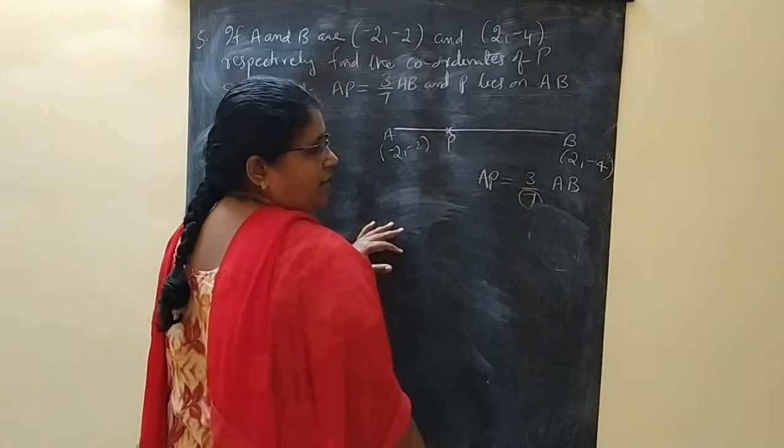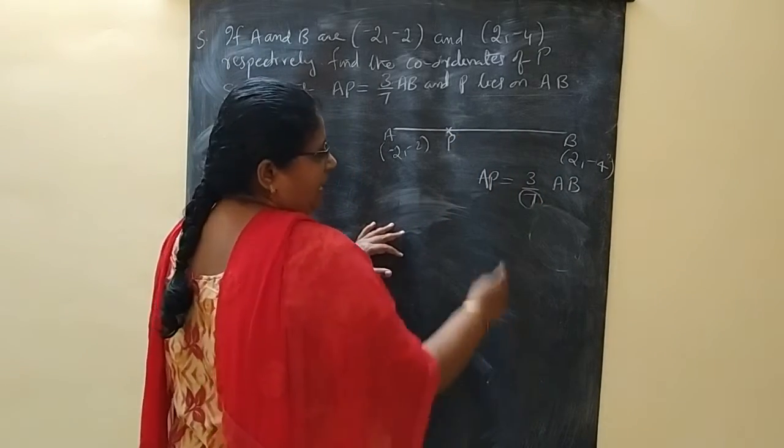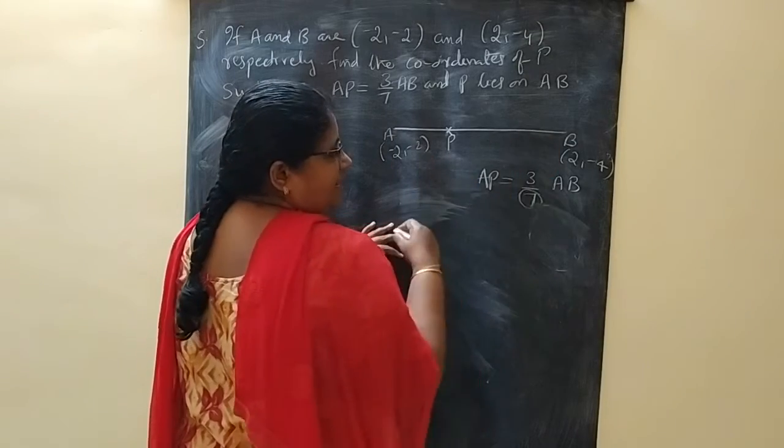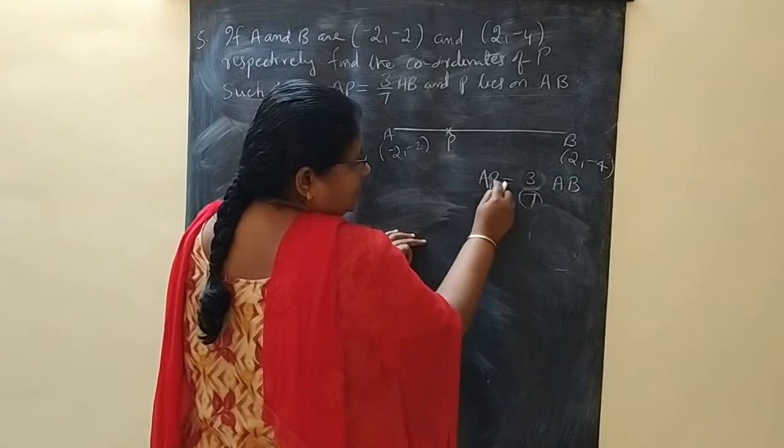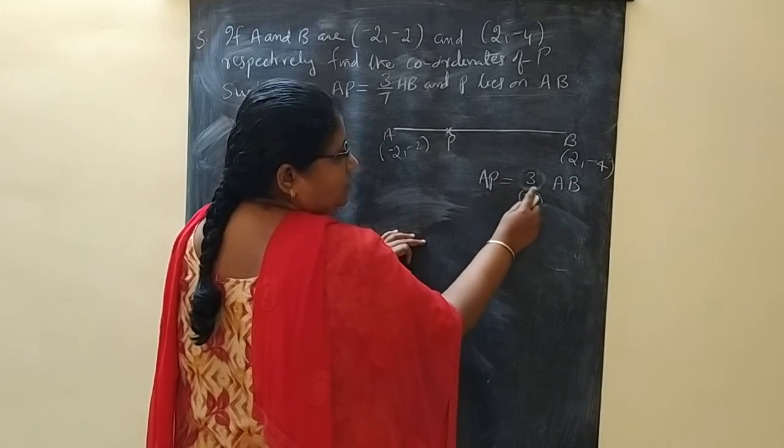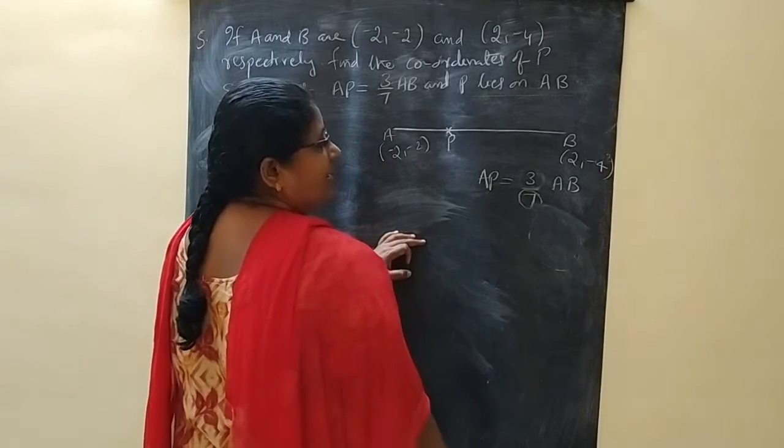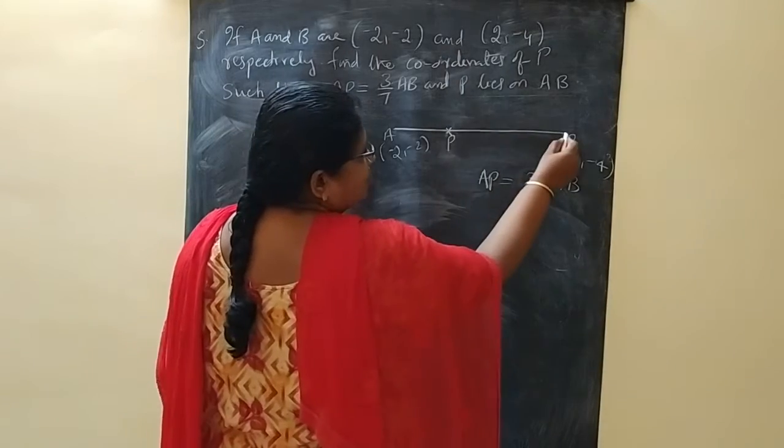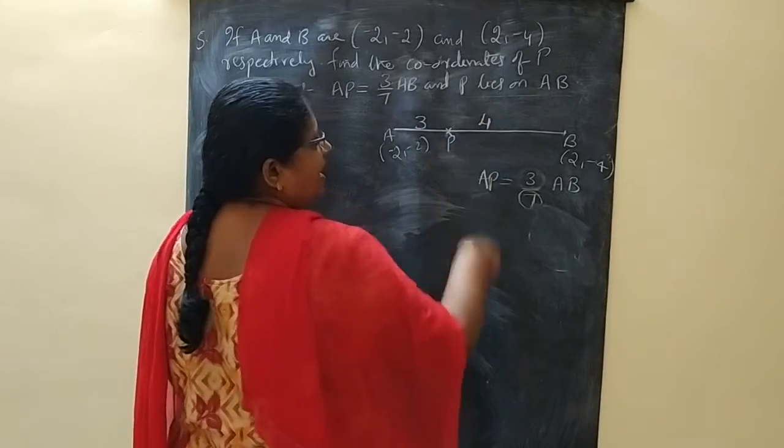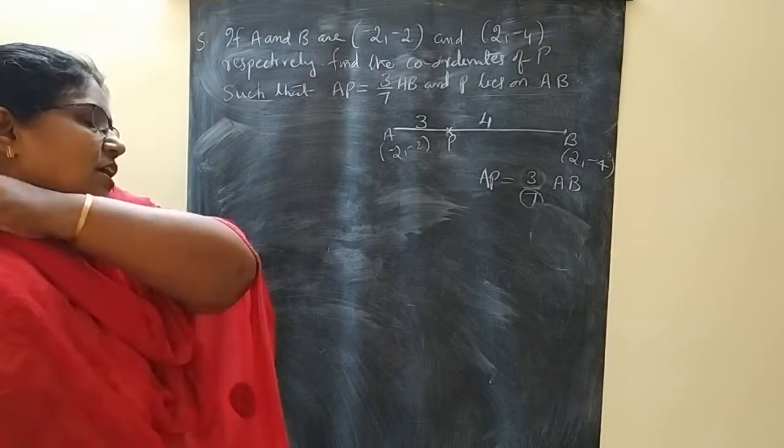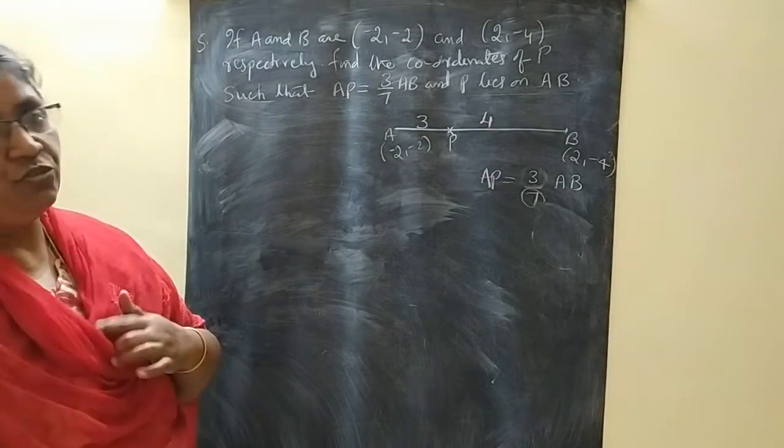How much is the remaining part? Four. This total is dividing into 7 parts. This part is 3 parts. That is the meaning of AP equals 3/7 AB. The balance part is 4 parts. We can easily tell that the ratio is 3 is to 4.